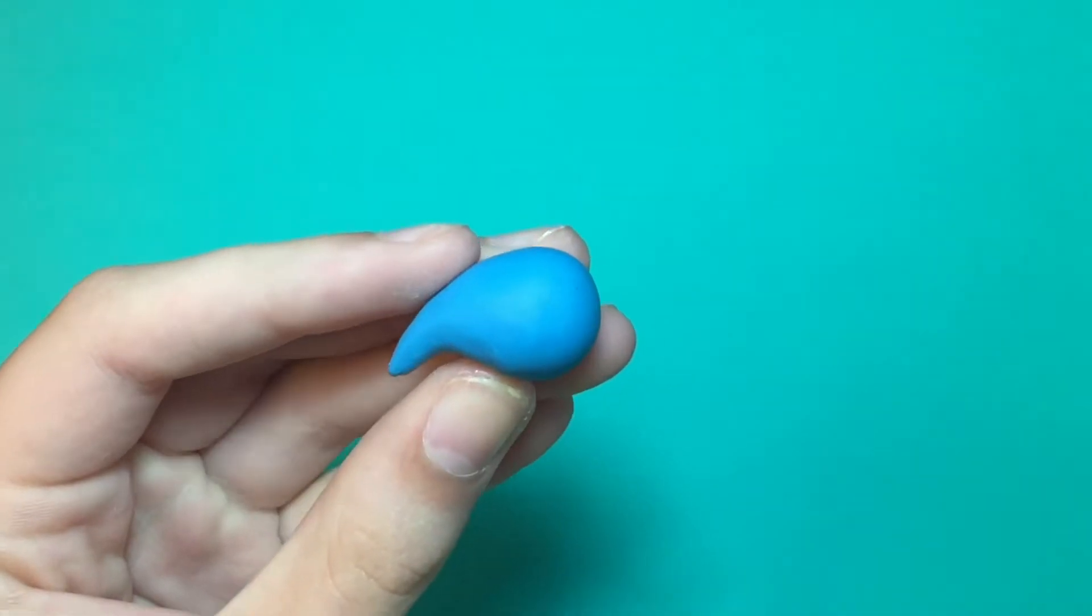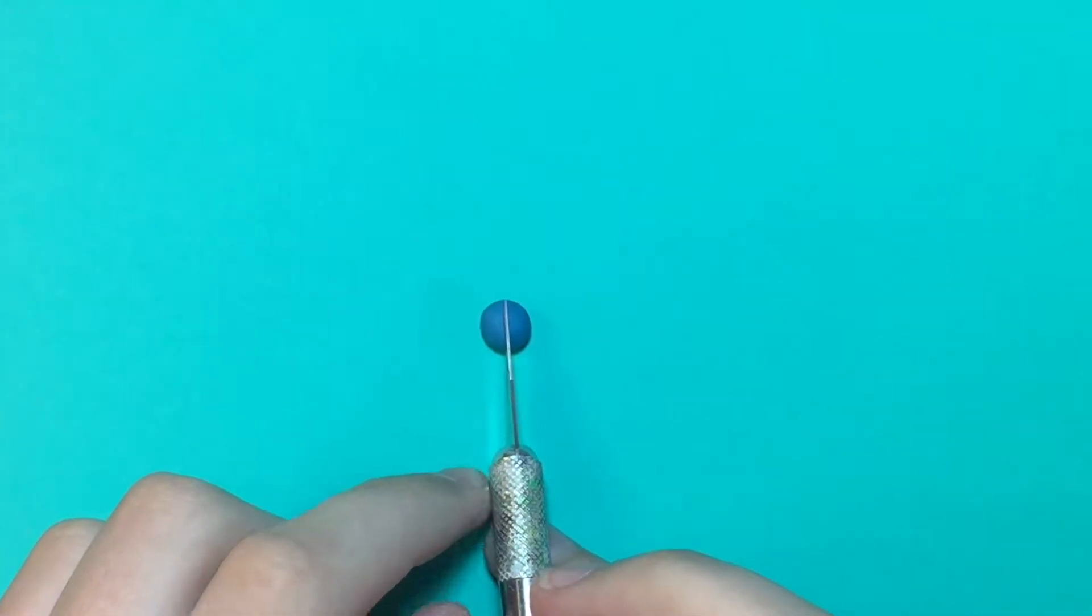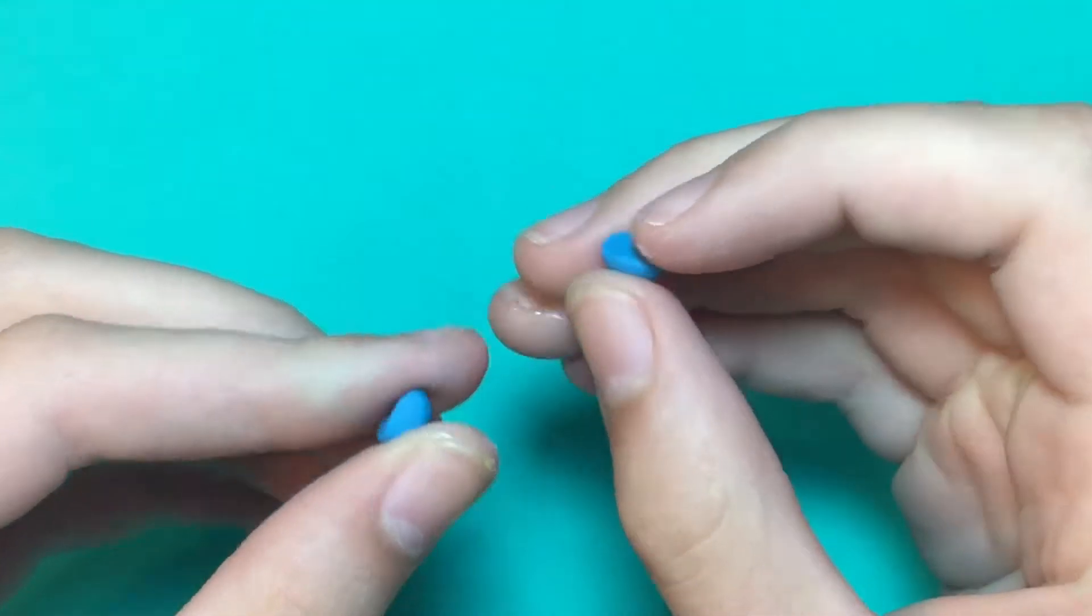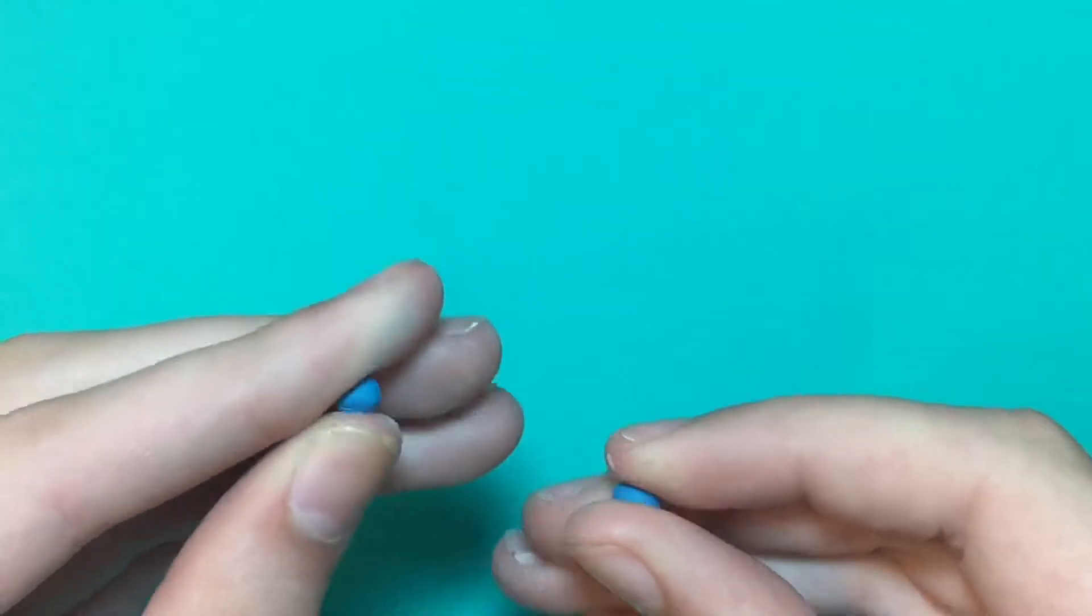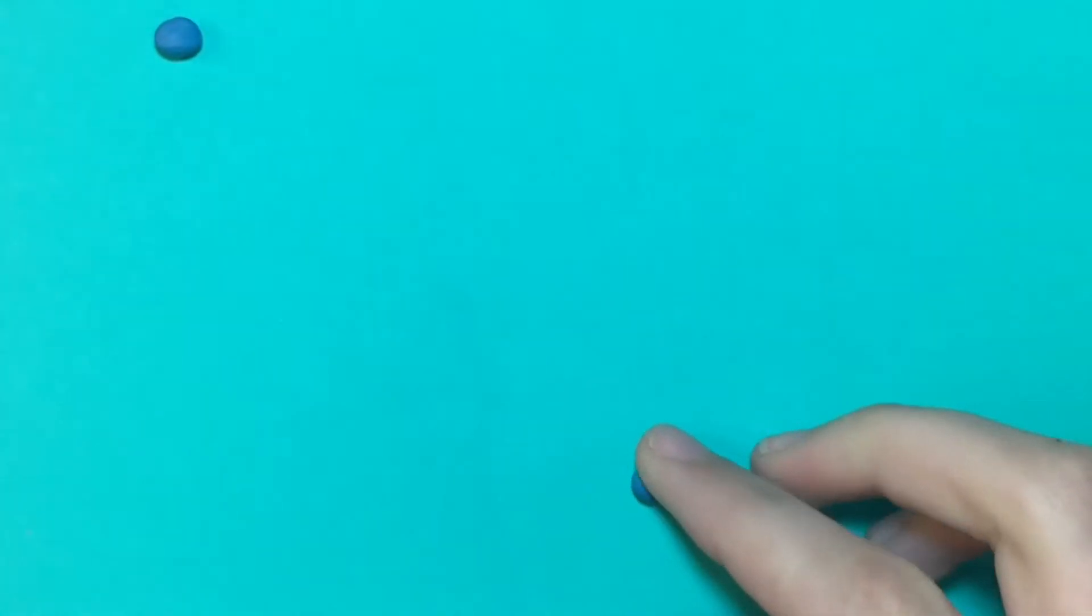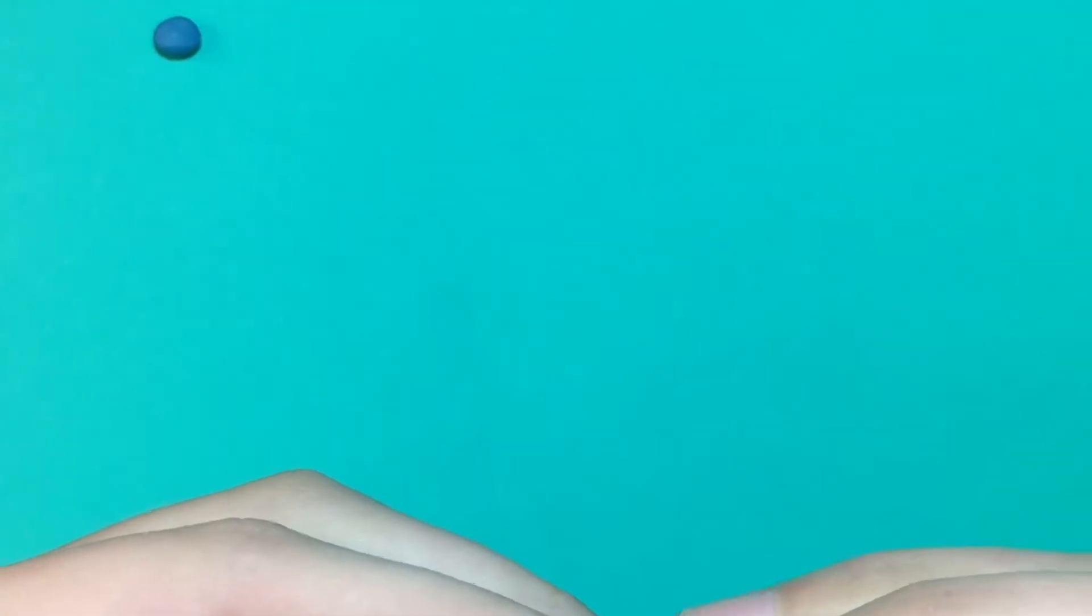Now take a small ball of blue clay and you want to cut that in half and what we're going to be doing is making the fins for the tail. So you want to take one half of the ball that you just cut in half and roll that into a ball and you want to flatten that into a circle. And then you just want to start shaping it so it resembles part of a mustache, or half of a mustache, and do that on both sides.